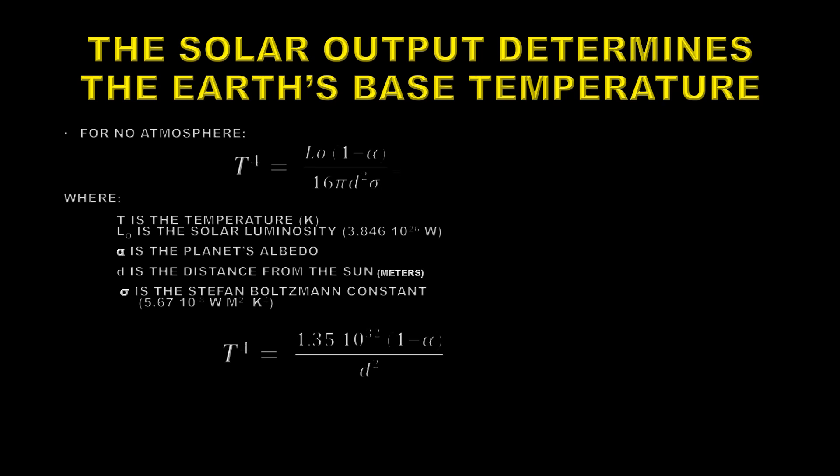The temperature to the fourth power equals 1.35 times 10 to the 32 times 1 minus the albedo over the distance from the Sun squared. Now this not only applies to the Earth but it applies to any planet without an atmosphere at a distance d from the Sun.